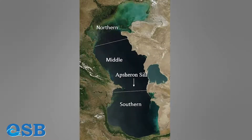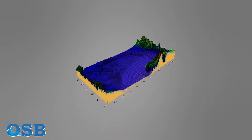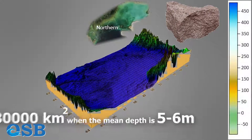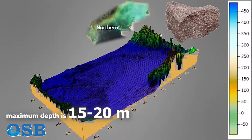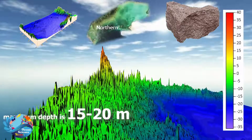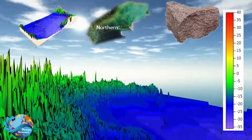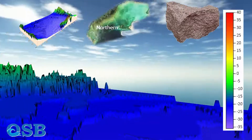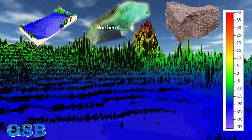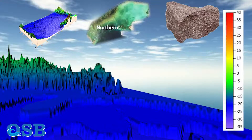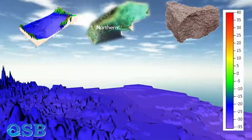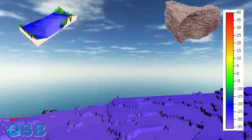The Caspian Sea can be divided into three parts based on bathymetry: northern, middle, and southern. The northern part has an area of 80,000 km² with a mean depth of 5 to 6 meters and a maximum depth of 15 to 20 meters. The northern basin dates back to pre-Cambrian times, approximately 541 million years ago, when critical phenomena occurred such as the formation of primitive fossils and oxygen generation in the primitive atmosphere. The bottom has a continental-type crustal structure, consisting of semi-oceanic rock, with coarse-grained sediments also found in this part.